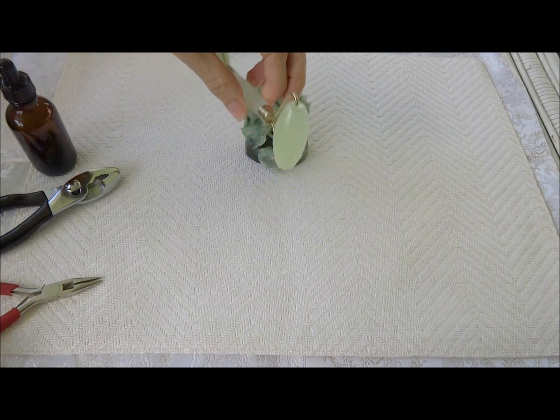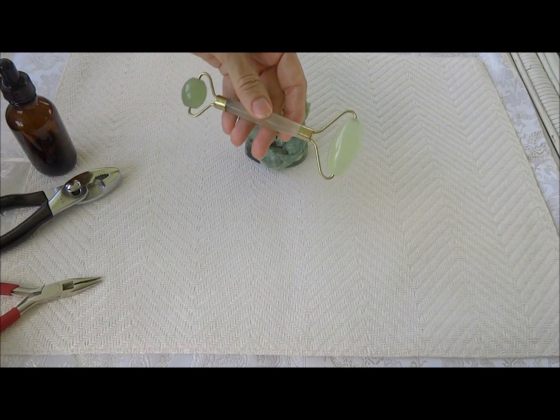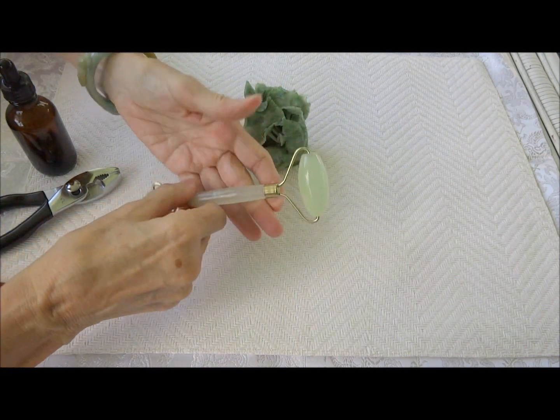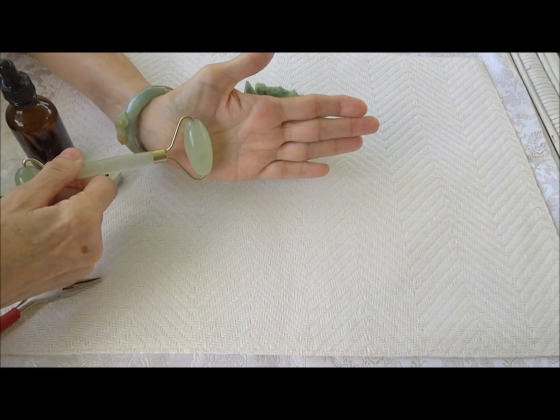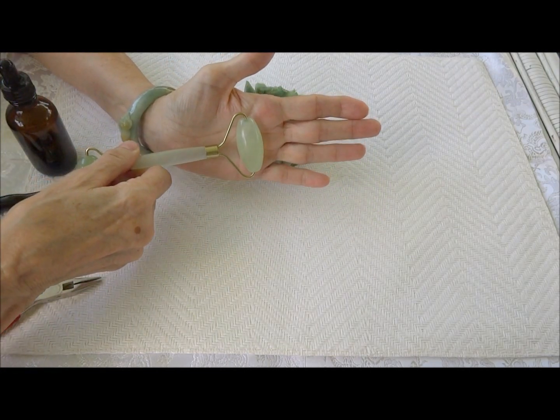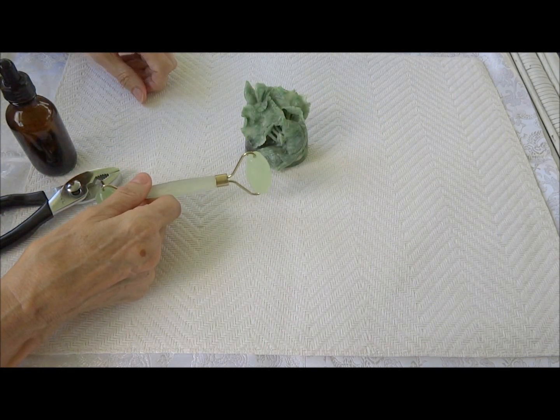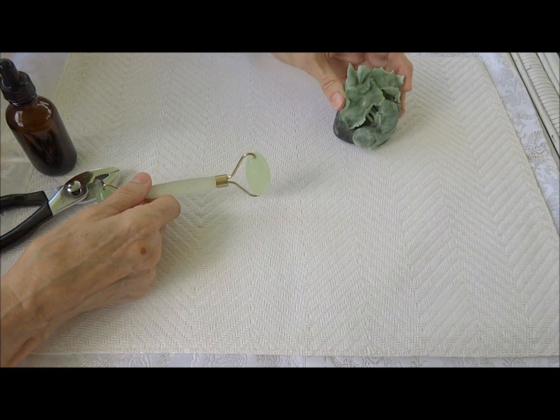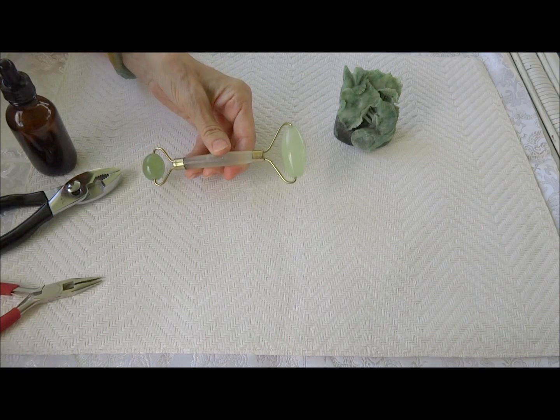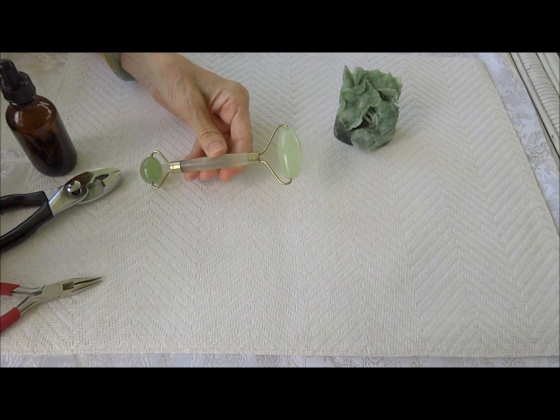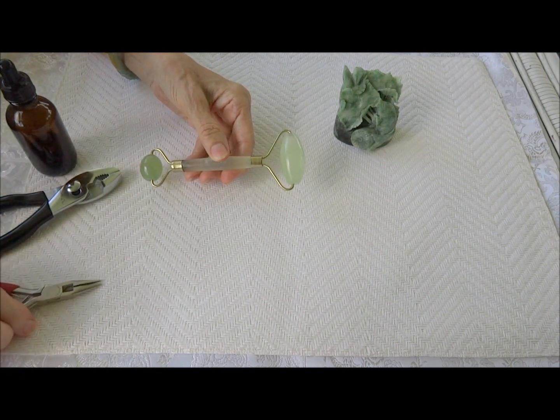When you order a jade roller, and this is our classic double roller, I check each jade roller to make sure that they work okay and roll fine. Well, this one just isn't rolling good, it's kind of sticking. So we're gonna fix that because when you get your jade roller and it doesn't roll smoothly, you might think you need to return it. But really you just need to know how to adjust it because things change when they get in the mail or the metal expands.